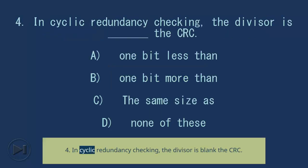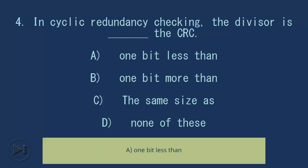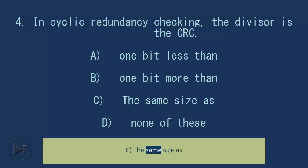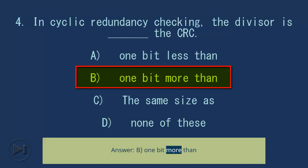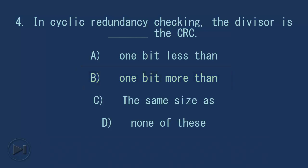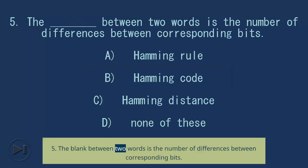Question 4: For cyclic redundancy checking, the divisor is blank the CRC. A) one bit less than, B) one bit more than, C) the same size as, D) none of these. Answer: B, one bit more than.